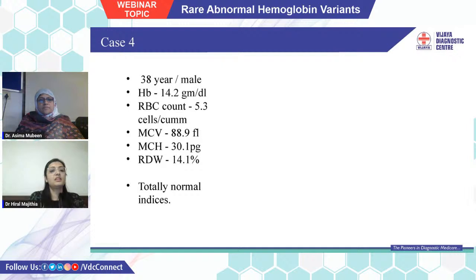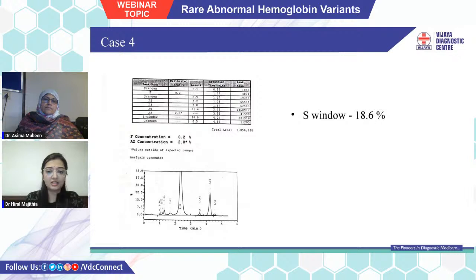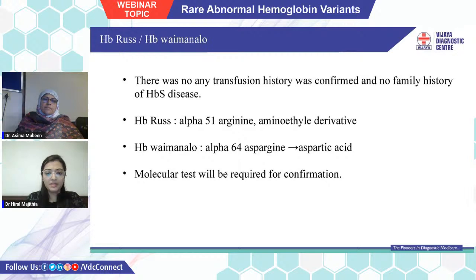Case 4: a 38-year-old male with hemoglobin 14.2, with completely normal RBC count and indices, but an S window of 18.6%. This cannot be labeled sickle heterozygous, which requires an S window more than 22%. There was no transplant history and no family history of HbS disease, confirming it is not HbS disease. Differential diagnoses: hemoglobin RAS, an alpha gene variant where on codon 51 arginine is replaced by an aminoethyl derivative; and HbY-menalo, also an alpha gene variant. Molecular testing is required for confirmation.